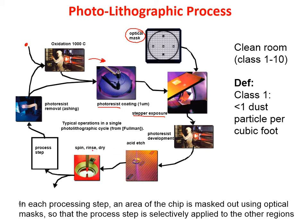After development, the structure is ready for the process step, which could be doping, depositing oxide in specific regions, or other operations. After the process step, the residual photoresist is removed. Then we repeat the sequence: define regions with the next mask, perform the next process step, remove resist. This cycle is repeated for each process step.